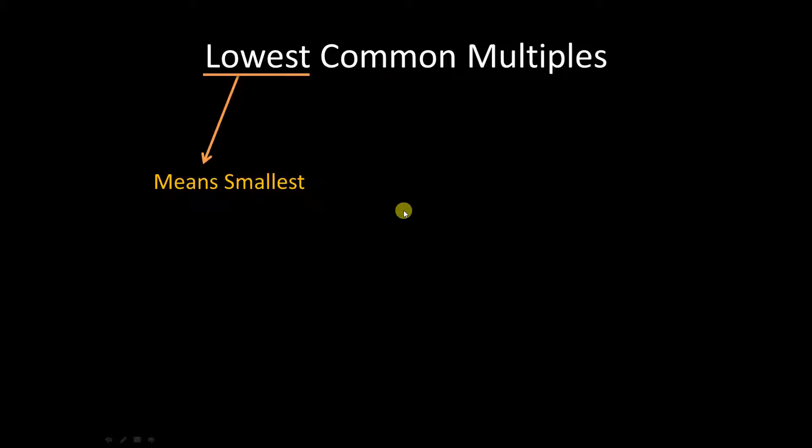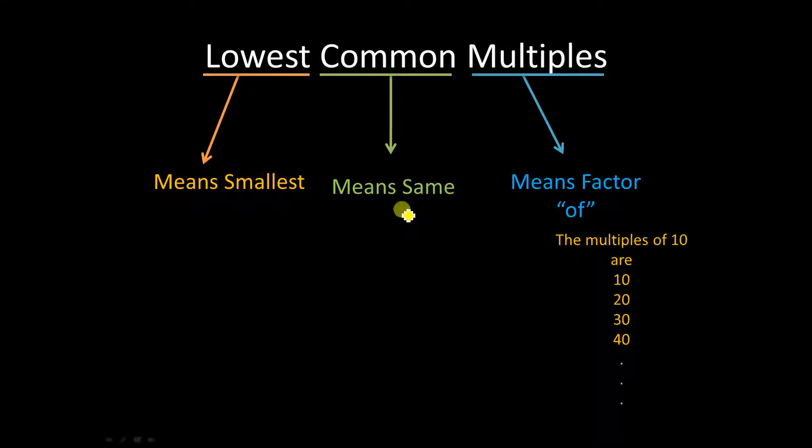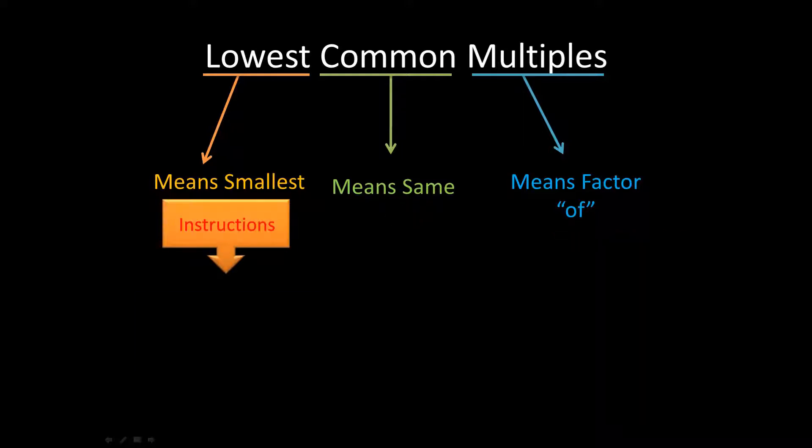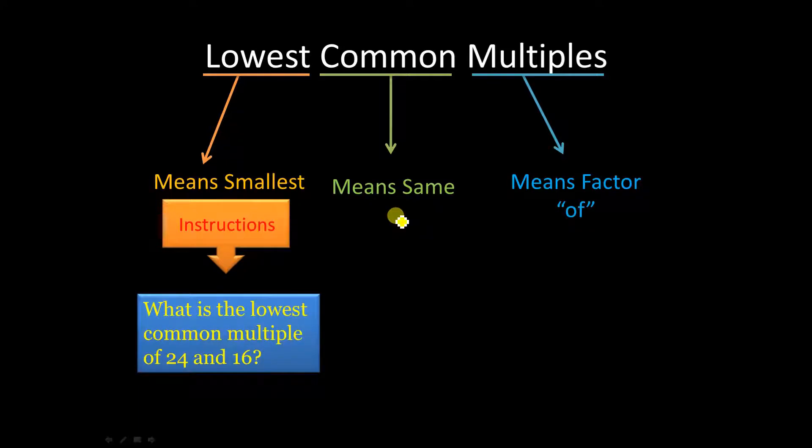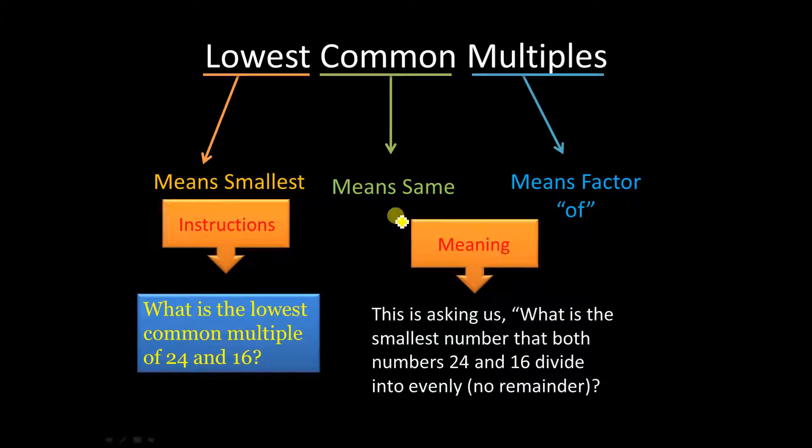Now lowest common multiple. Lowest means smallest, common of course is the same, and multiple means it's a factor of. So the multiples of 10 would be 10, 20, 30, 40, 50, and so on. So what you're going to see is a question that says, what's the lowest common multiple of 24 and 16? What that means is, what's the smallest number that both 24 and 16 divide into evenly? So, no remainder.